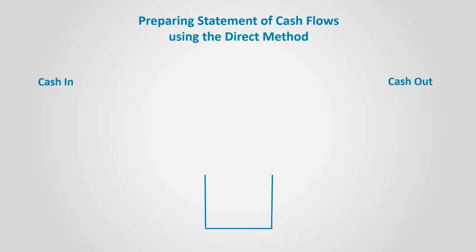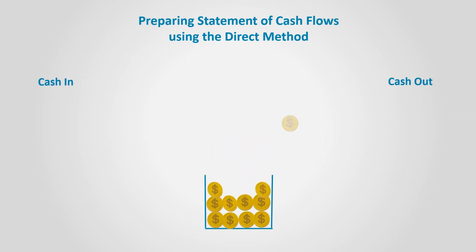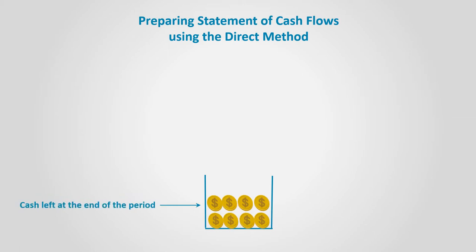Preparing the Statement of Cash Flows using the Direct Method. The direct method is a straightforward method. Assume that the business has a cash box. Cash from operations goes into the cash box and cash expenses related to operations are withdrawn from the cash box. Each time cash is collected or dispersed, it goes in or out of the box respectively. The amount of cash in the box at the end of the period represents the cash generated from Operating Activities, assuming that we had no cash in the box at the beginning of the period.